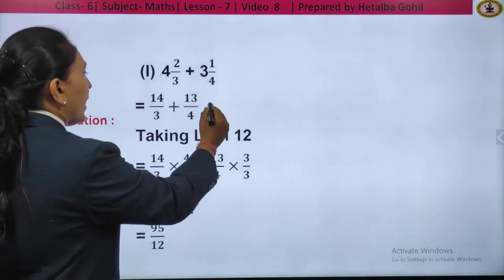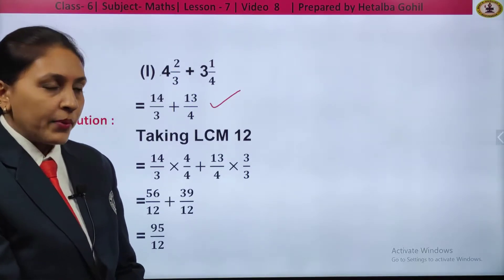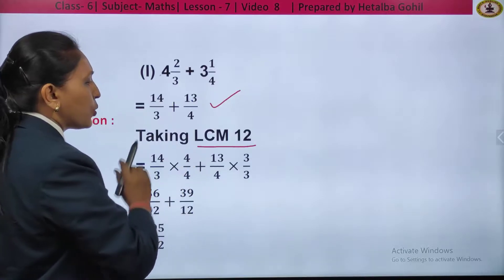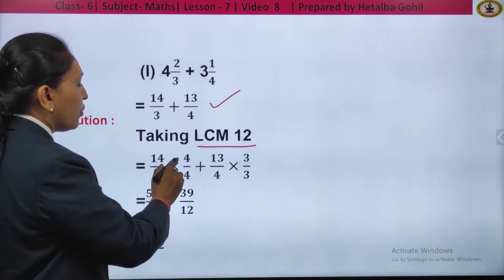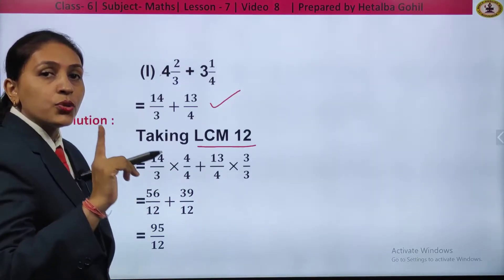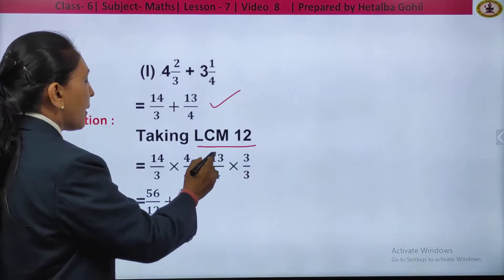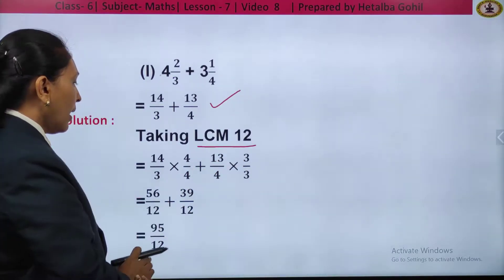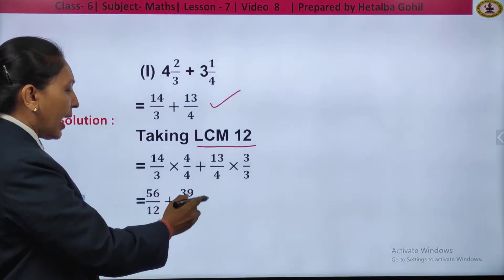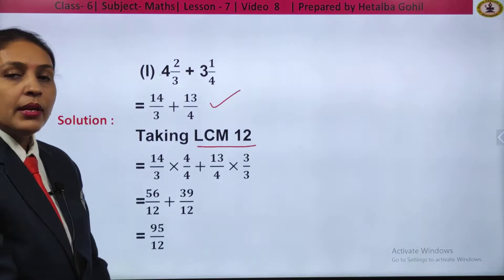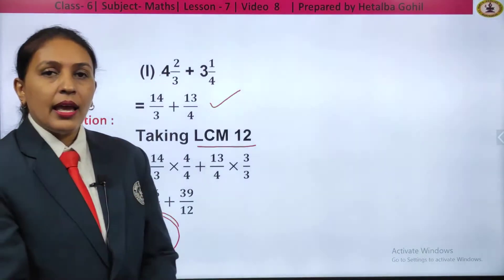That is the improper form. Now, as the denominators are different, we have to take LCM. The LCM of 3 and 4 is 12. Converting to equivalent fraction with denominator 12: 14 by 3 into 4 by 4, because the denominator is 3 and I need to change it to 12, so I multiply by 4. Plus 13 by 4 into 3 by 3. Multiplying: 14 fours are 56 by 12, plus 13 threes are 39 by 12. The denominators are the same, so add the numerators: 56 plus 39 gives 95 by 12.